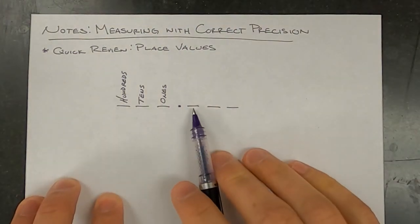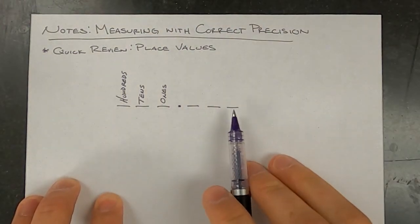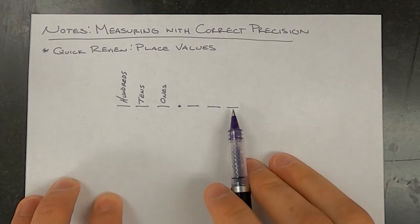And then these? Tenths? Hundredths? And? That's right, the thousandths place.